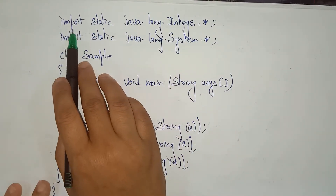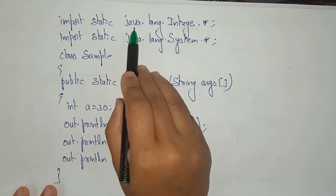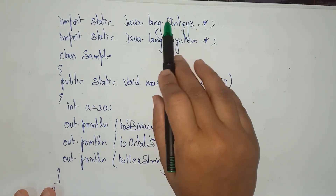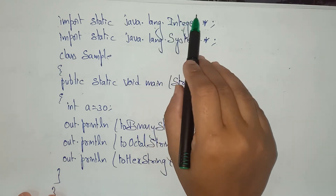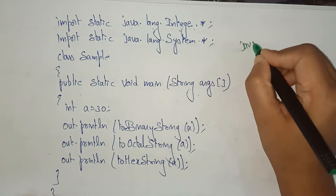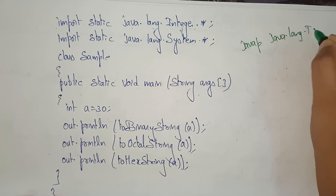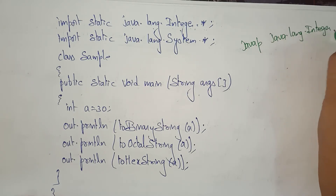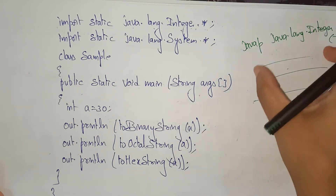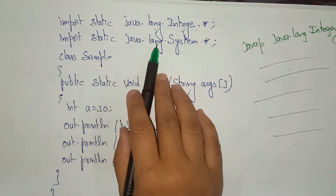I have written the statement: import static java.lang.Integer.* — package name, sub-package name, class name, dot star. Whatever methods are under this class, you can access them. To check the available methods, go to the command prompt and type: javap java.lang.Integer — then you can see many methods and constructors related to static members.